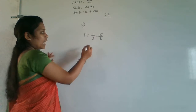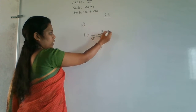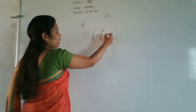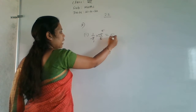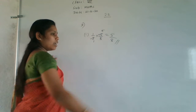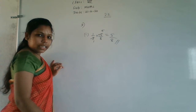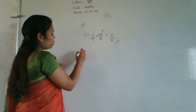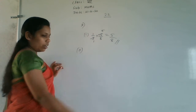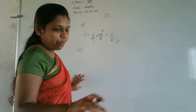For 1/3 × 15/8: cancel 3 and 15 — 3 goes into 15 five times, giving 1 and 5. So 5×1 = 5 in the numerator and 8×1 = 8 in the denominator. Answer is 5/8. These are the same types of problems as before.